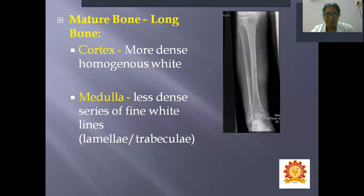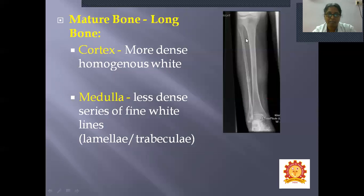How does a normal skeleton appear in an X-ray? Taking the long bones of the lower limb as an example — in an adult mature bone, the outer area is called the cortex and the inner area is called the medulla. The tibia and fibula show a cortex that is dense, homogeneously white, whereas the center — the medulla — shows a less dense area with a series of fine white lines, representing the trabecular or lamellar bone.